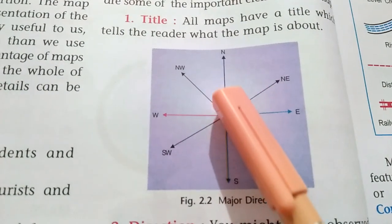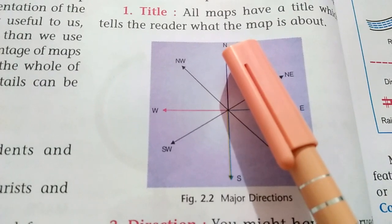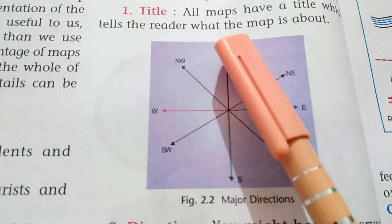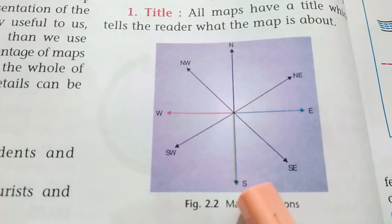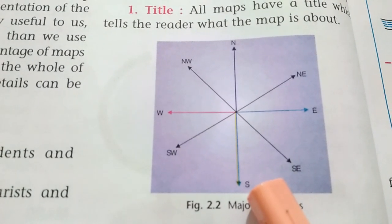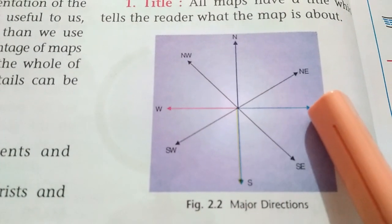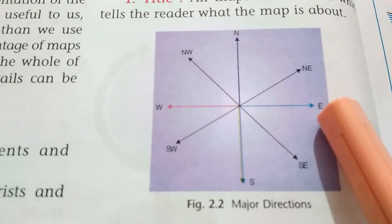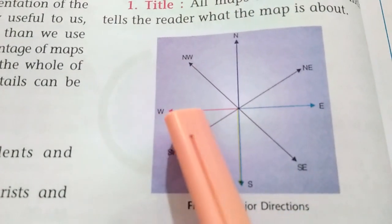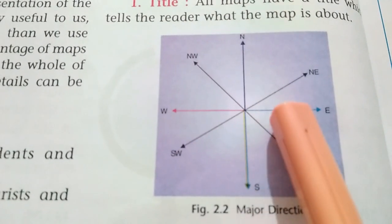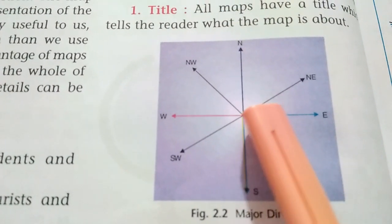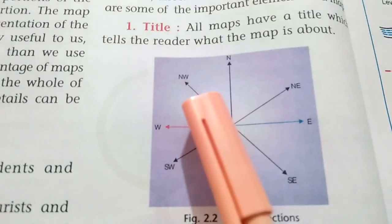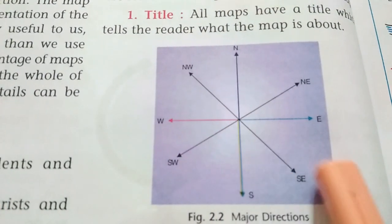In this figure, the arrow points upward and is marked with N at the tip, indicating the north direction. The other directions — northwest, southwest, southeast — are also shown.